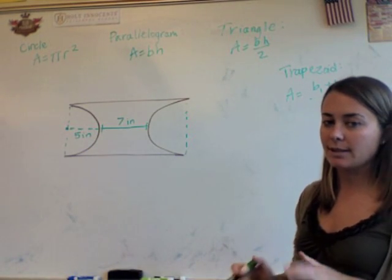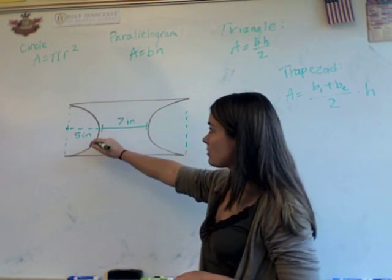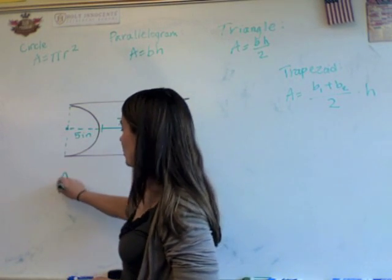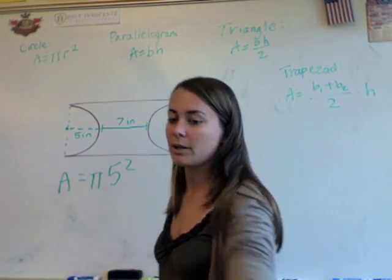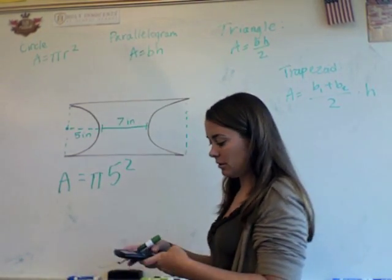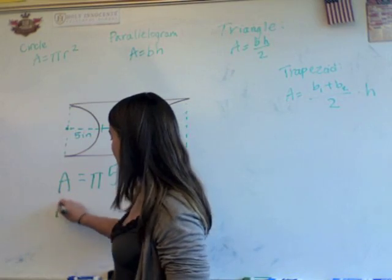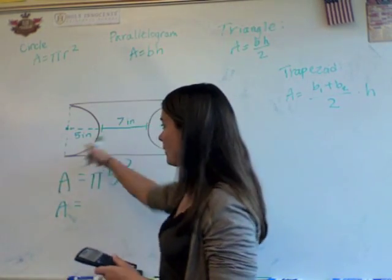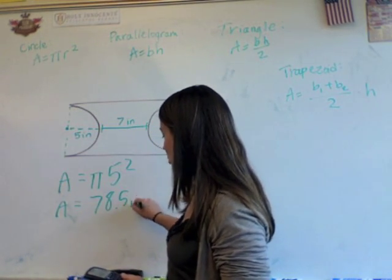So first, let me figure out the circle because that looks like it's going to be a little easier to figure out. So I'm going to use the radius. The radius is five. So the area of my circle is going to be pi times five squared or 25. I've got my calculator. 25 pi is about 78 and a half. So the area of these two half circles, if I combine them, is about 78 and a half inches squared.